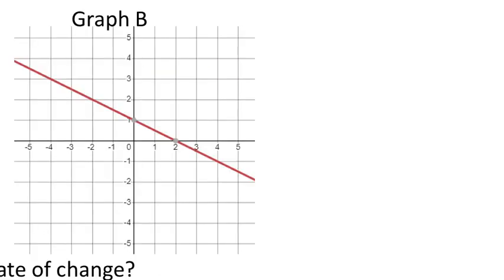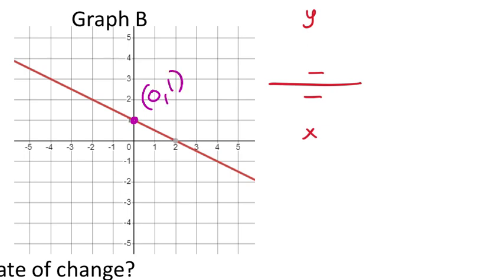Let's go to graph B. We're going to do the exact same thing—find the rate of change with the slope formula. X's on the bottom, y's on the top. Since I can see the y-intercept, I'm going to use it. I can see the red line goes through the y-axis here; the x-value is always 0, but this corresponding y-value is 1.